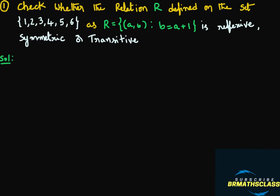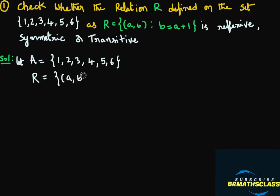Try to understand the question. Check whether the relation R defined on this set is reflexive, symmetric, or transitive. R is a relation defined on this set as R equal to the set of all ordered pairs (a, b) such that b = a + 1. Two things are important here: the set on which R is defined — I will take the given set as A — which is {1, 2, 3, 4, 5, 6}. The relation R is defined as the set of all ordered pairs such that b = a + 1.